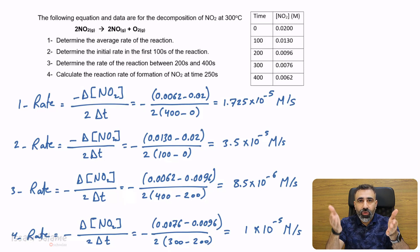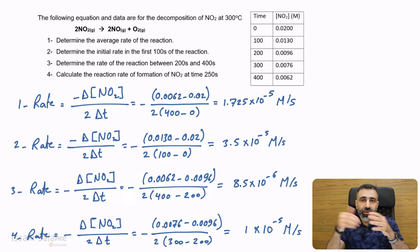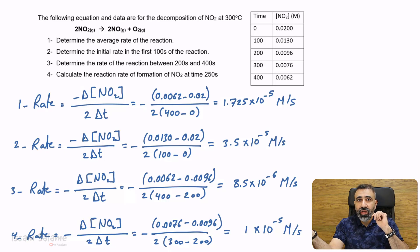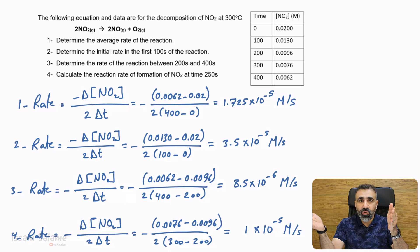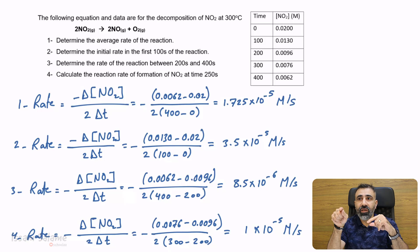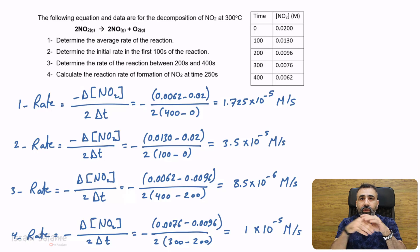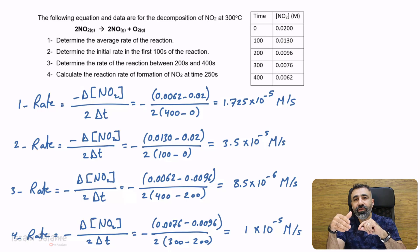So it's easy. To calculate the rate, we find concentration final minus concentration initial divided by T final minus T initial. If we need the average, T final is the last one and T initial is the first one. If asked for two different times, we know which is final and which is initial. If asked about a certain specific time, like 250 seconds, we take the time after as the final and the time before as the initial. And that's it for how to calculate the rate of a chemical reaction.